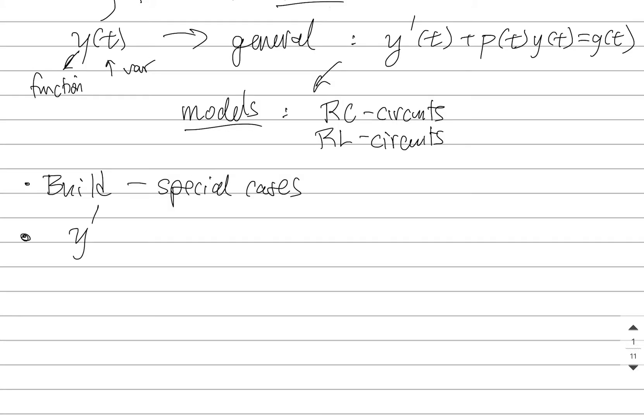The first special case we're going to talk about is if we've got y'(x), and this thing is just a function of x, that means it's the variable only. All you need to do is anti-differentiate this. It's very straightforward.